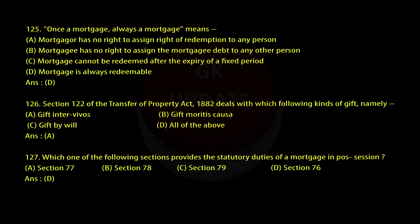Question 125: 'Once a mortgage, always a mortgage.' What does this mean? A: A mortgager has no right to assign right of redemption to any person. B: Mortgagee has no right to assign the mortgagee debt to any other person. C: Mortgage cannot be redeemed after the expiry of a fixed period. D: Mortgage is always redeemable. Answer: D.